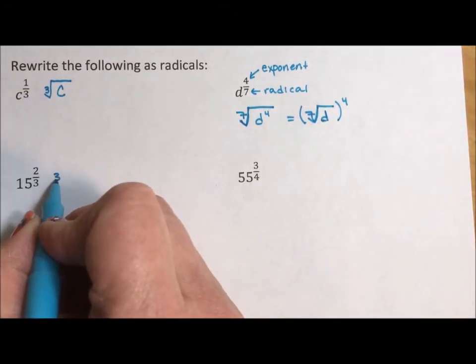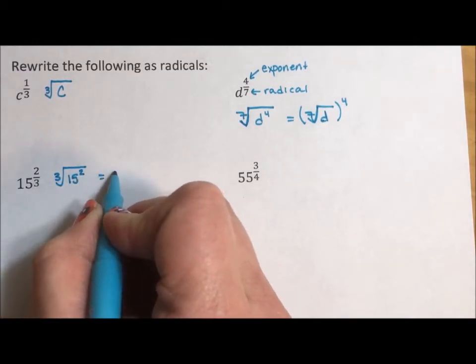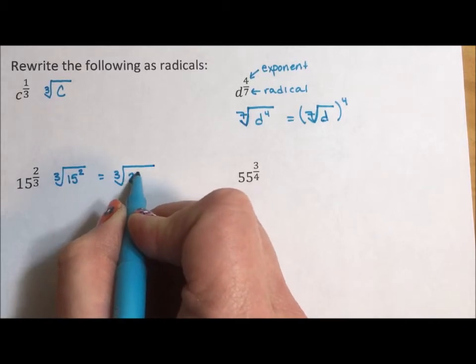So here we have the cubed root of 15 squared, which of course is the same as the cubed root of 225.